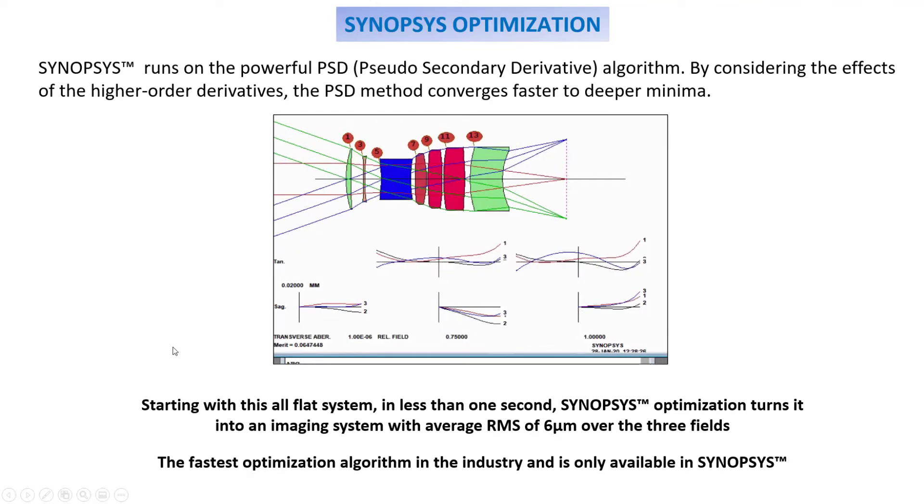in less than one second, Synopsys turns it into a seven-element imaging system with an average RMS of six microns over three fields. This is the power of Synopsys optimization.